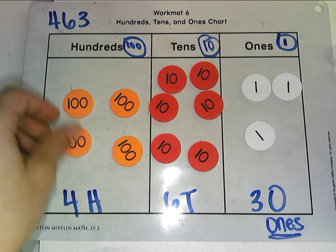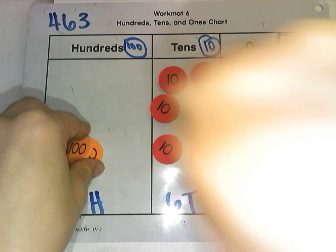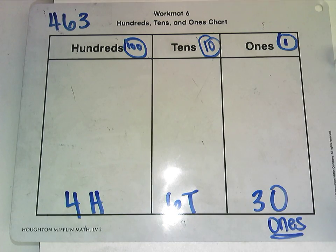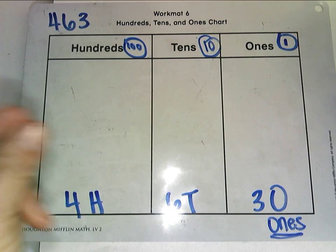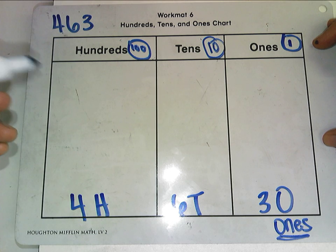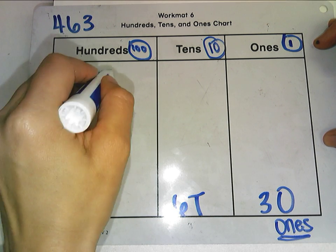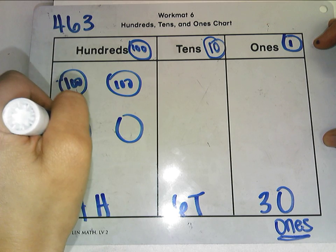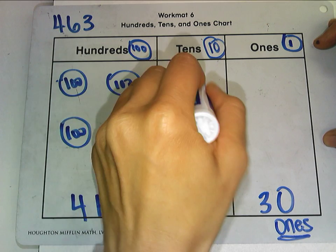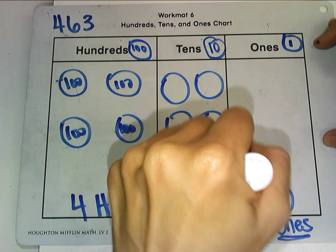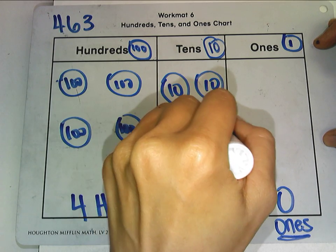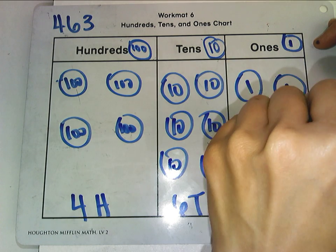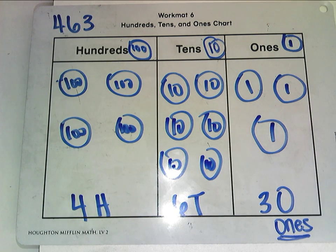I'm pretty sure you can do this on your own. Let me show you what you would do if you're going to sketch it. We'll eventually be using sketches only because it's more efficient and faster. For this same number, draw four circles for 100's — I like to draw the circles first and then write the value inside. Then draw six 10's. Don't forget to write the value inside. And then three 1's — don't forget to write that value. Same exact thing, a little bit faster.